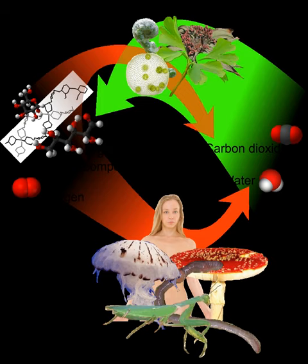Autotrophs can be photoautotrophs or chemoautotrophs. Phototrophs use light as an energy source, while chemotrophs use electron donors as a source of energy, whether from organic or inorganic sources. However, in the case of autotrophs, these electron donors come from inorganic chemical sources. Such chemotrophs are lithotrophs. Lithotrophs use inorganic compounds such as hydrogen sulfide, elemental sulfur, ammonium, and ferrous iron as reducing agents for biosynthesis and chemical energy storage. Photoautotrophs and lithoautotrophs use a portion of the ATP produced during photosynthesis or the oxidation of inorganic compounds to reduce NADP+ to NADPH to form organic compounds.